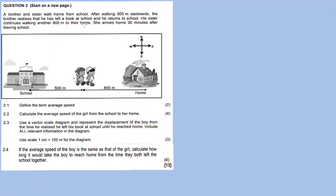Now question 2: a brother and a sister walk from home. After walking 500 meters east, the brother realizes that he left a book at school and returns to school. His sister continues walking another 800 meters to their home. She arrives home 30 minutes after leaving school.